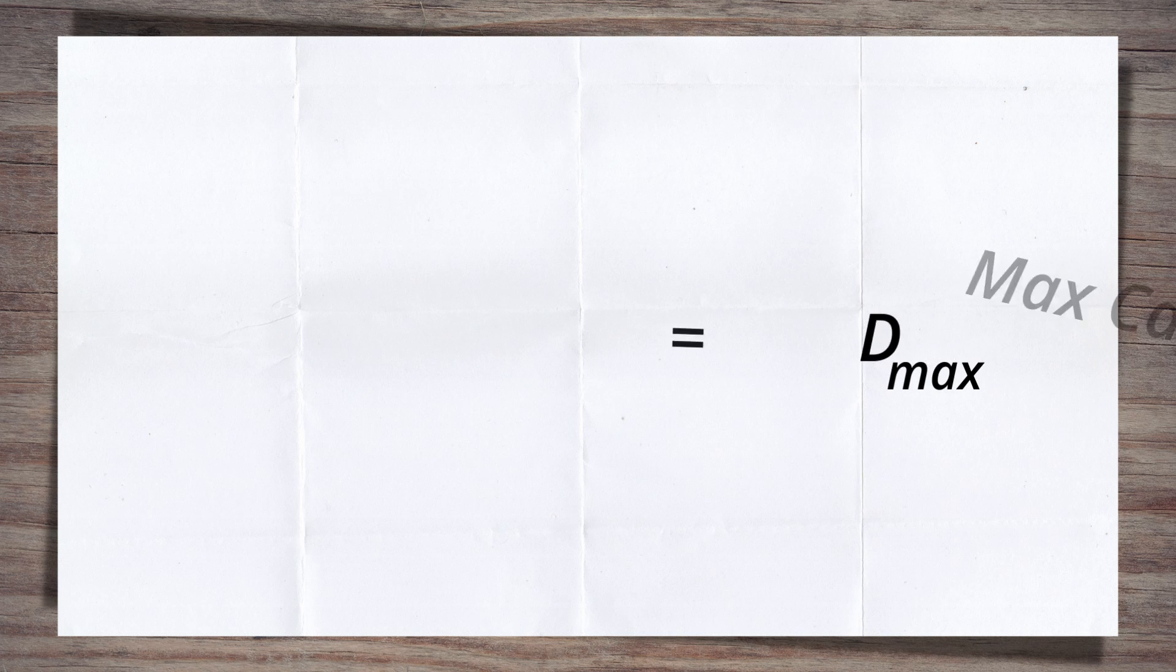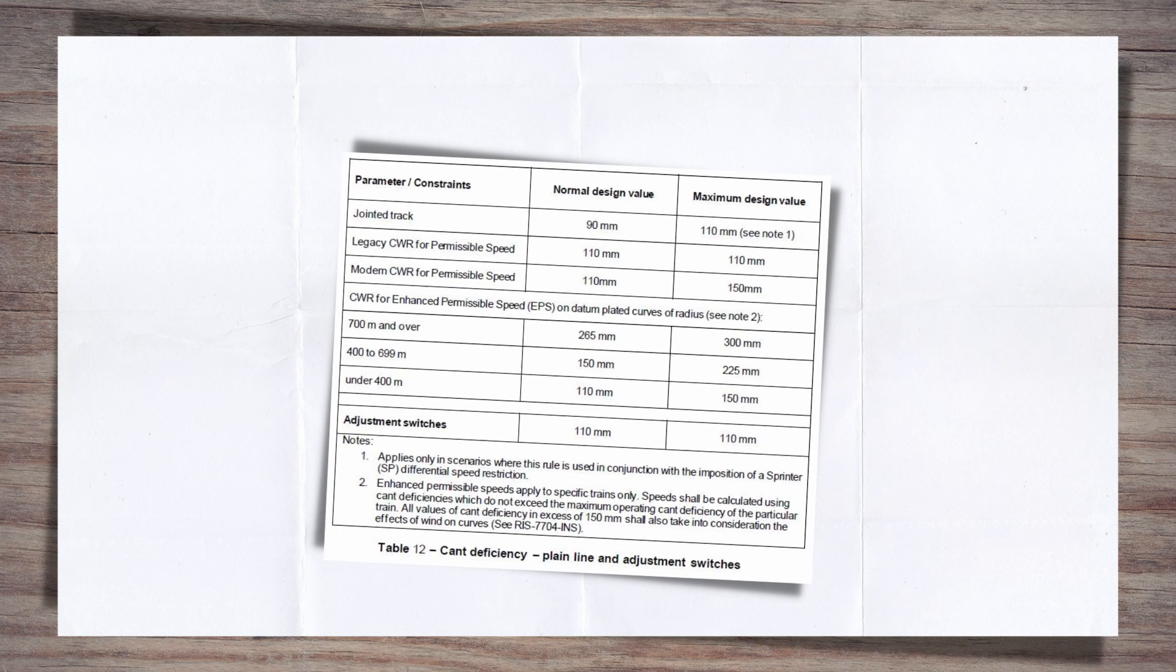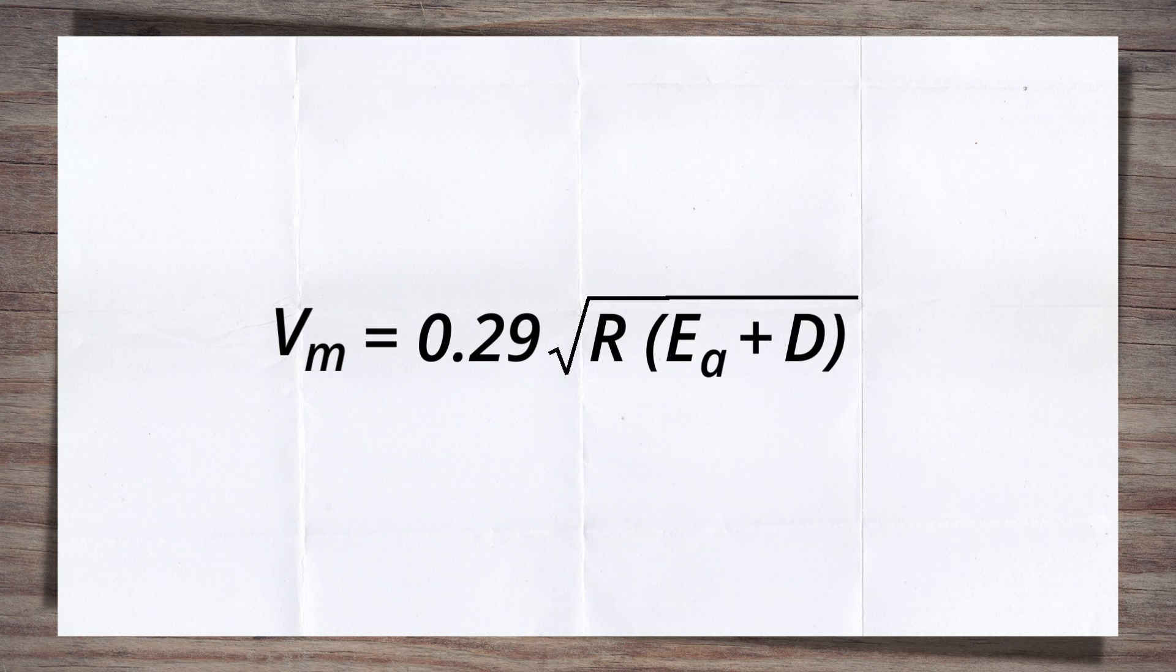In the UK, the maximum cant deficiency is determined by the construction type of the track, so be sure to check this and then refer to the standard. Using this formula, remembering that this equation gives speed in kilometres per hour, the maximum speed for a curve can be found.